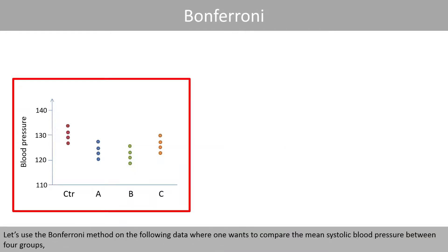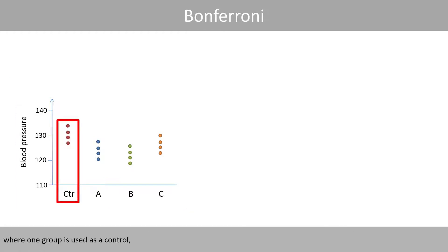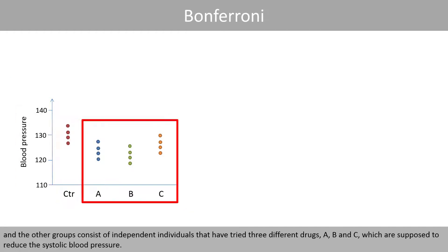Let's use the Bonferroni method on the following data, where one wants to compare the mean diastolic blood pressure between four groups. One group is used as a control, and the other groups consist of independent individuals that have tried three different drugs — A, B, and C — which are supposed to reduce the diastolic blood pressure.